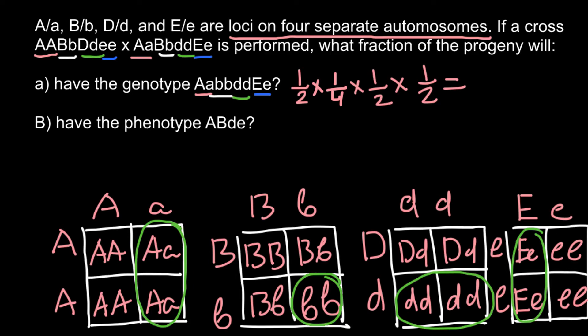Now we can give an answer. One half multiplied by one quarter gives one eighth, multiplied by one half gives one sixteenth, and multiplied by one half gives one over 32. This is the probability for these two parents if we cross them to have this genotype in their progeny. If you need the answer in percentage form, divide one by 32 and multiply by 100.